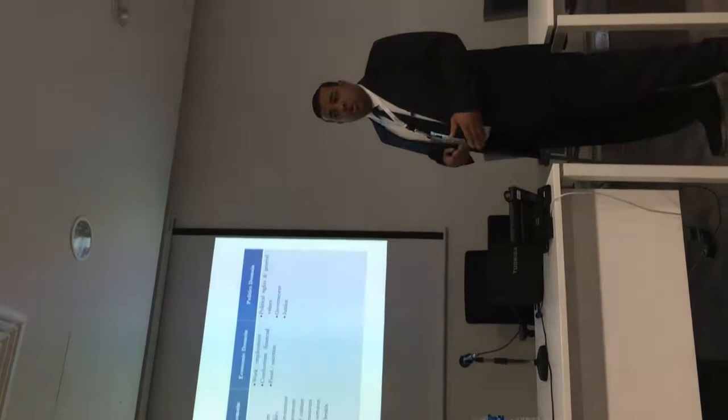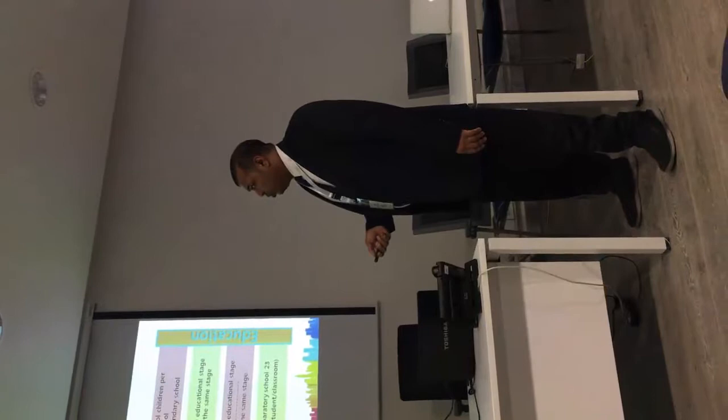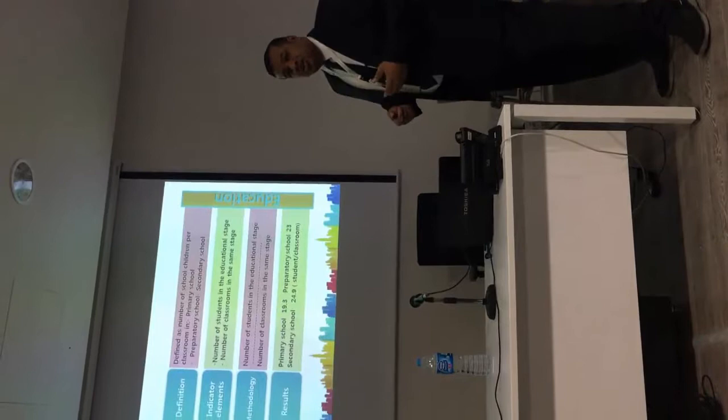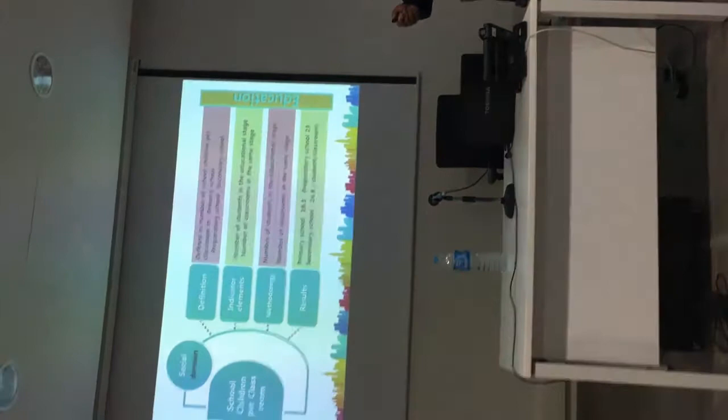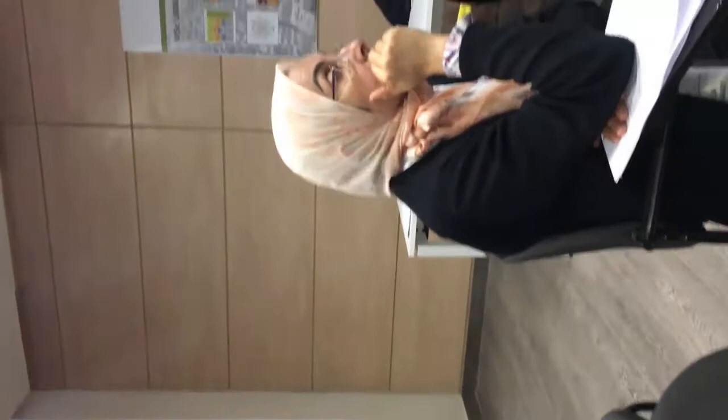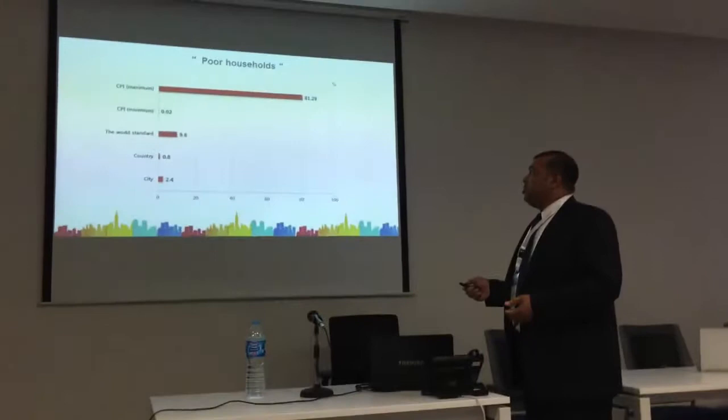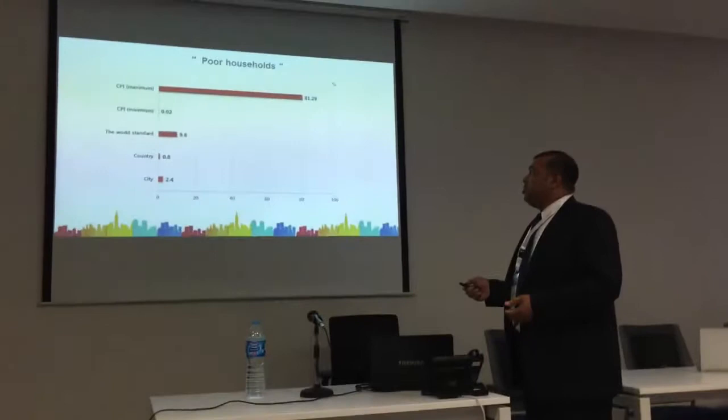This is one of the social domain indicators, called 'school children enrollment.' I show this because I want to tell you that every indicator has a definition, indicator elements, and a methodology — the way to calculate this indicator — established from UN-Habitat's city prosperity index. Finally, the result is the indicator value, and this is a globally comparable result. We can compare this indicator across any city, compare it with the world standard established by UN-Habitat, and compare it against maximum and minimum benchmarks which were also established by UN-Habitat.